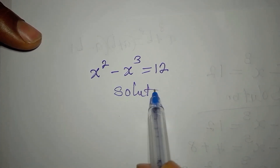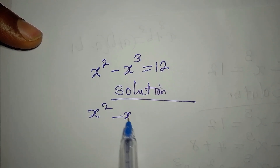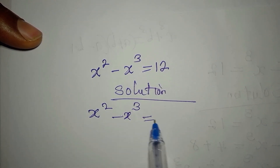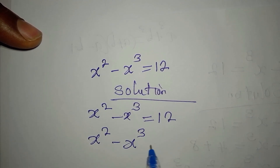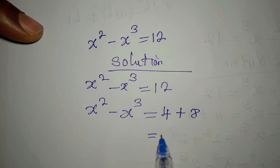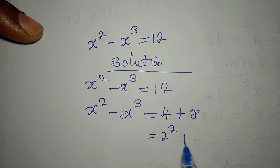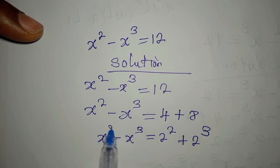We are looking at the solution to this problem: x squared minus x cubed equals 12. We already know what to do with 12 — x cubed equals 12 can be written as 4 plus 8, because 4 is 2 squared and 8 is 2 cubed. So here we still have our x squared and our x cubed, and here we have our 2.